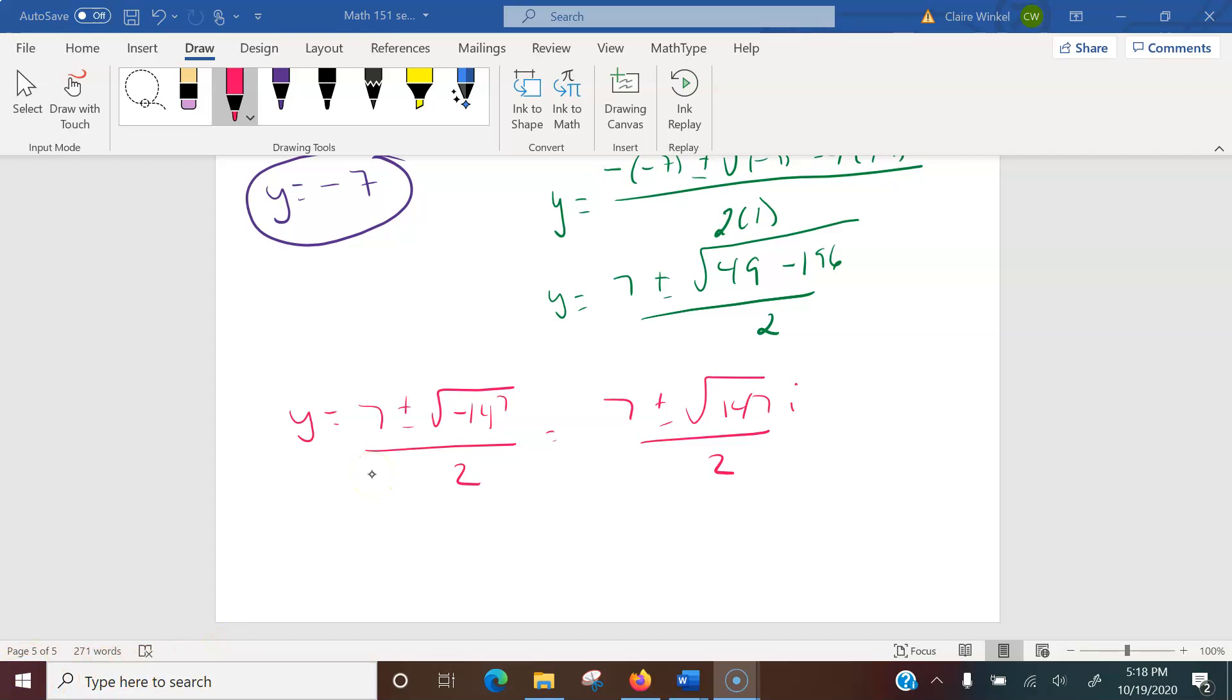Alright, and if I recall correctly, 147 is the same as 49 times 3. So this is 7 plus or minus 7 root 3 over 2 with an i here. So all of your zeros, we've got negative 7, then 7 halves plus 7 root 3 over 2i, and 7 halves minus 7 root 3 over 2i.